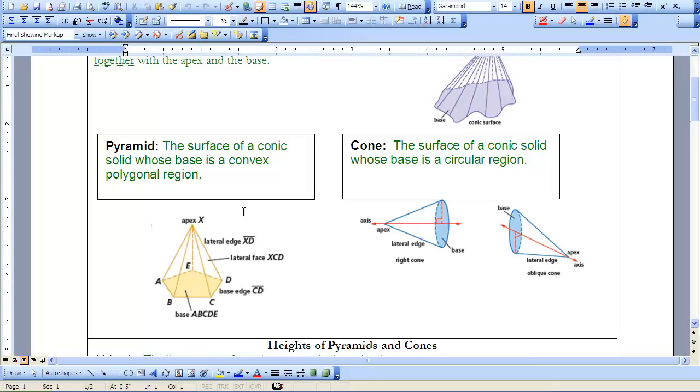So this is the vocab as it relates to the pyramid. When we have the cone, we still have the lateral edge, we still have a base, it just happens to be a surface.